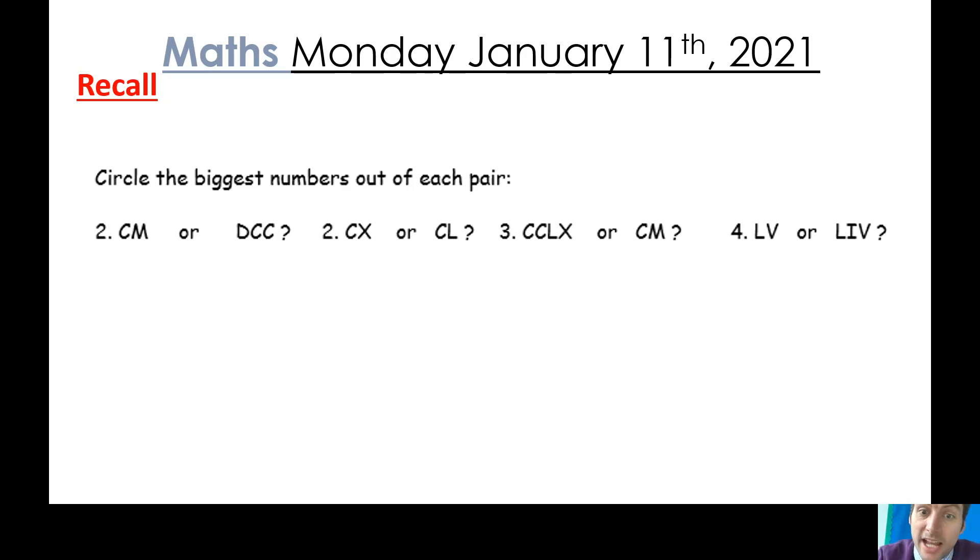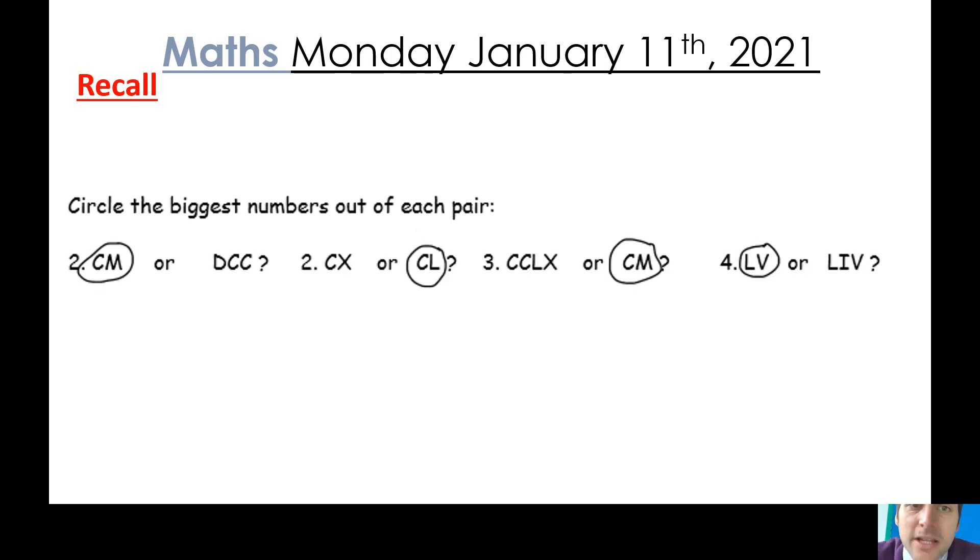Okay guys, hopefully now you've had a chance after pausing the video to think through. So here we go, here's your answers. So you can see that CM, which means 100 less than 1000, so 900 is greater than DCC, DCC being the value of 700.